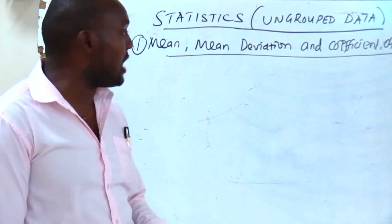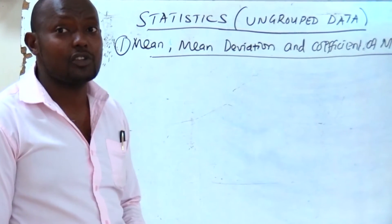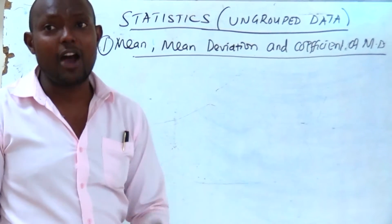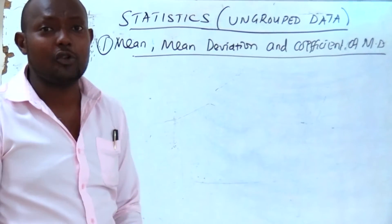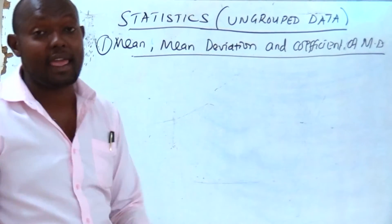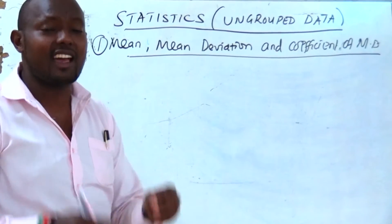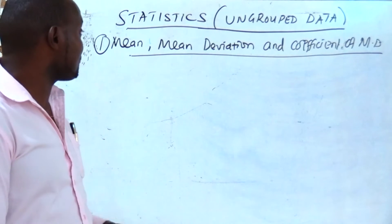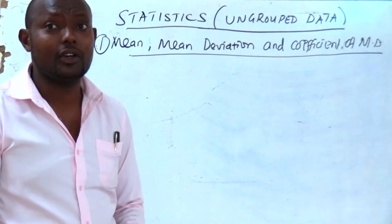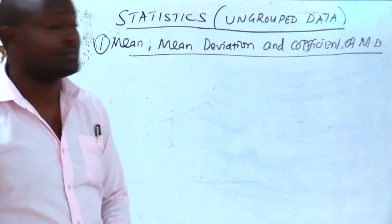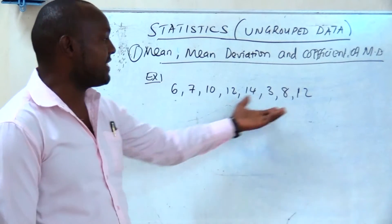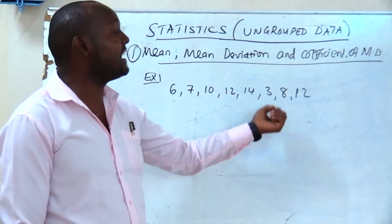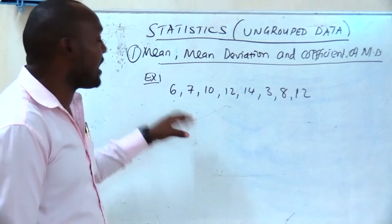I will start by giving an example, then we shall look at each method and calculate each one. How do we calculate arithmetic mean? How do we calculate harmonic mean? How do we calculate geometric mean? Then we shall compare our answers. So let's take the first example. You are given this raw data: 6, 7, 10, 12, 14, 3, 8, and 12. We are required to calculate the mean.